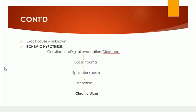As far as etiological factors, the exact cause is unknown, but there are different hypotheses. One is the ischemic hypothesis. Here, constipation, digital evacuation of stool from the anal canal, or sometimes diarrhea leads to trauma to the local anoderm. Because this area is supplied by somatic nerves, this leads to pain, and the pain in the anoderm leads to sphincter spasm.